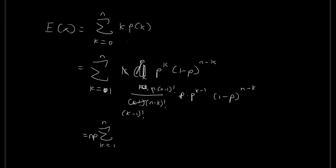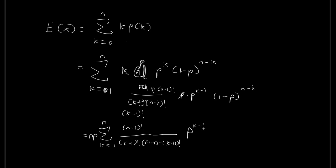So rewriting everything in a neater way, we've pulled out an n and a p, placing np outside of the summation sign. We then have n minus 1 factorial over k minus 1 factorial. For the n minus k factorial in the denominator, we rewrite this as n minus 1 minus k minus 1 factorial — this doesn't change anything since the minus 1s cancel each other out, it's just a slight rearrangement of terms.